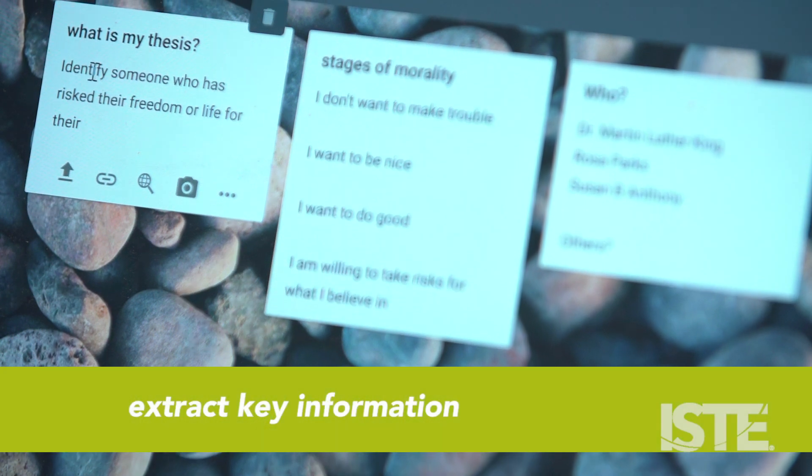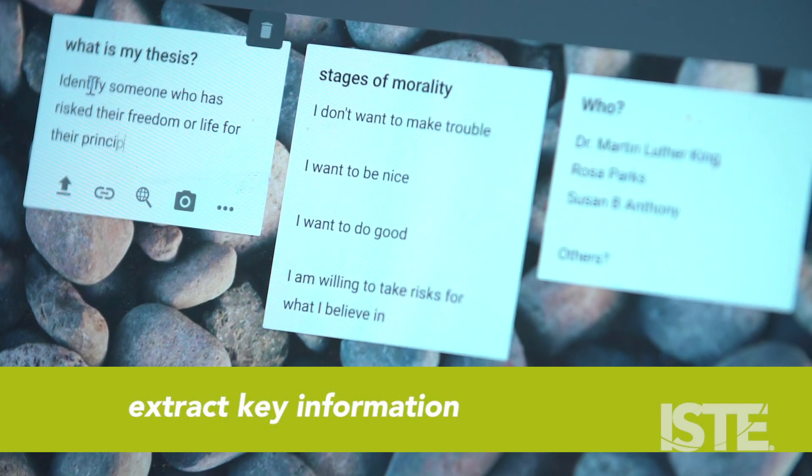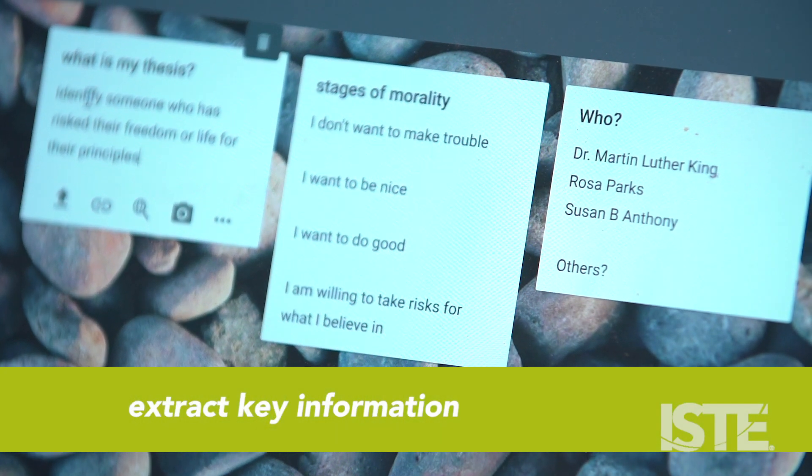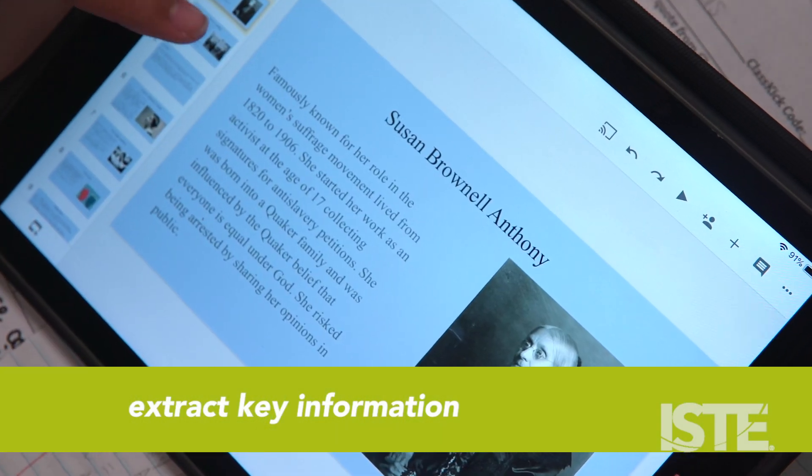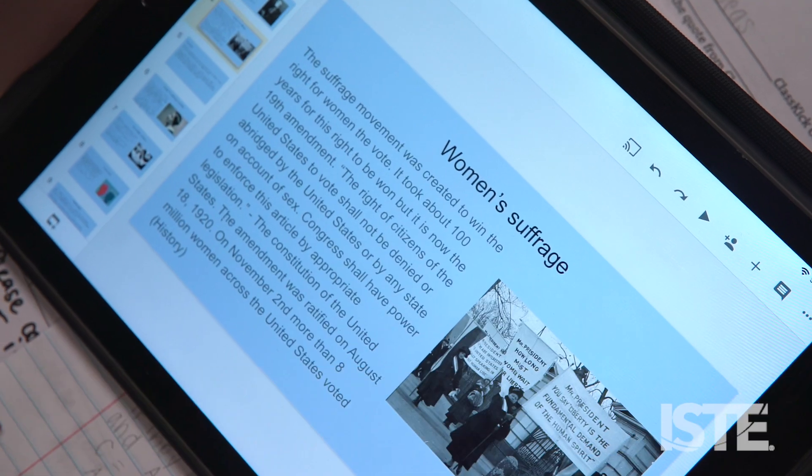In everyday life, we have to make decisions based on what we believe, and from everything I extracted from the concept, I chose Susan B. Anthony because she tried to achieve the right for women to vote, even though it was illegal at the time.